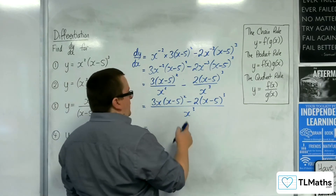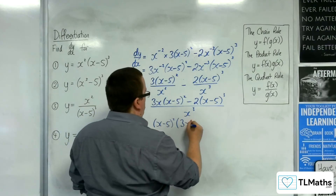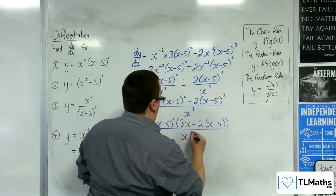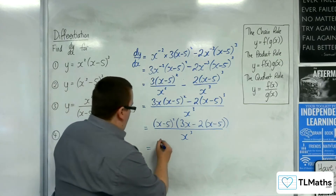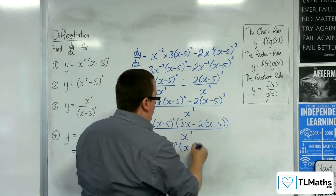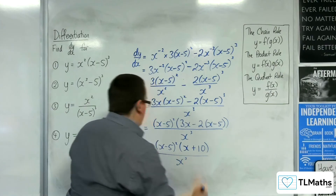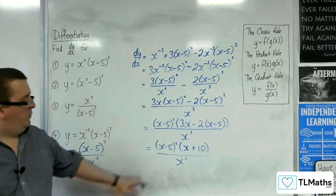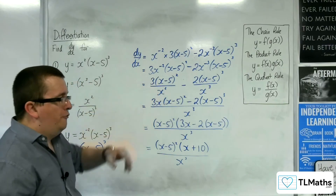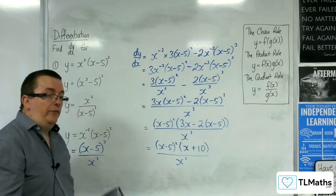That gives 3x(x minus 5) squared minus 2(x minus 5) cubed all over x cubed. Factorising the numerator, pull out (x minus 5) squared to get (x minus 5) squared times (3x minus 2(x minus 5)) over x cubed, which simplifies to (x minus 5) squared times (x plus 10) over x cubed. The problem is this required dealing with messy algebraic fractions.